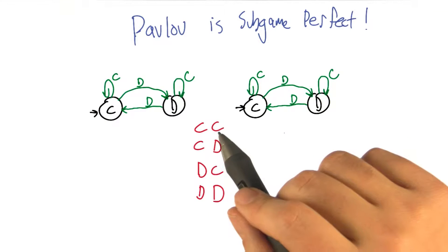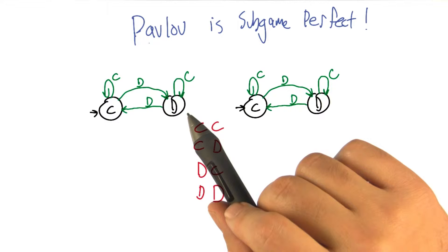So that's very good. So you were able to realize that Pavlov is a Nash equilibrium, but we can go further than that. We can go further than that and show that in fact Pavlov is subgame perfect.